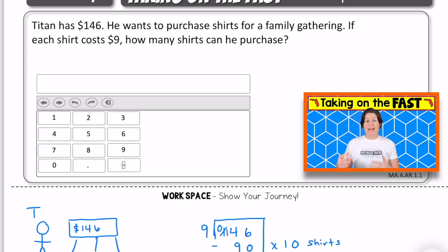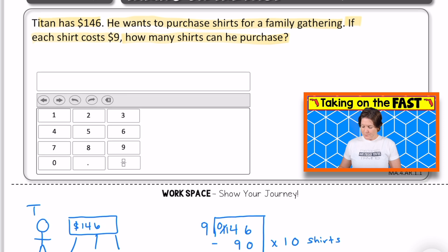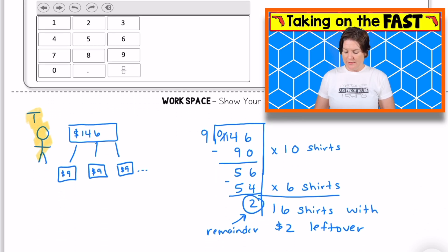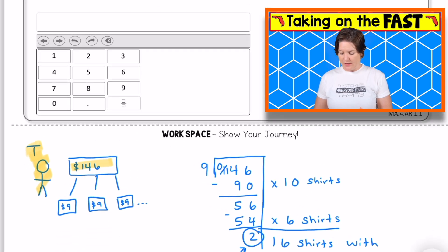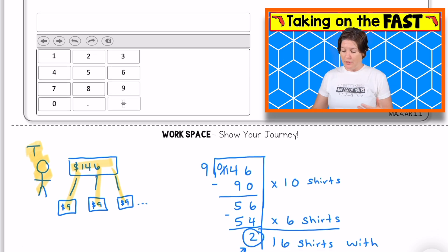This next problem is an equation editor problem. So we are going to use the equation editor tool that kind of looks like a calculator, but it doesn't calculate anything. So this question says Titan has $146. He wants to purchase shirts for a family gathering. If each shirt costs $9, how many shirts can he purchase? So here is my workspace down here. I've got somebody named Titan who had $146. I wanted to draw this out to make it make sense. And I knew that he was purchasing shirts. Each shirt cost $9, $9, $9. I quickly realized that this was going to involve division because I was going to continue to separate $9 to determine the number of shirts that he can purchase.